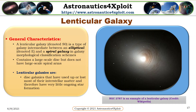A lenticular galaxy is a type of galaxy intermediate between an elliptical and a spiral galaxy in galaxy morphological classification schemes. A lenticular galaxy contains a large-scale disk but does not have large-scale spiral arms. Lenticular galaxies are disk galaxies that have used up or lost most of their interstellar matter and therefore have fairly little ongoing star formation. This picture shows NGC 2787, which is an example of a lenticular galaxy.